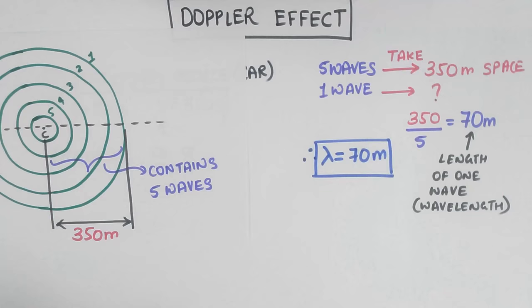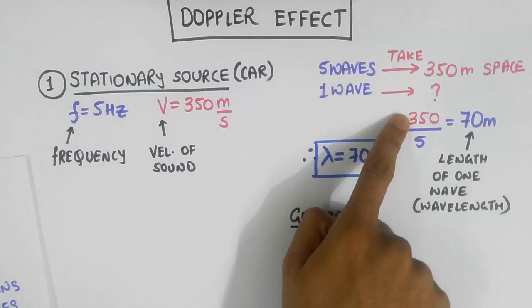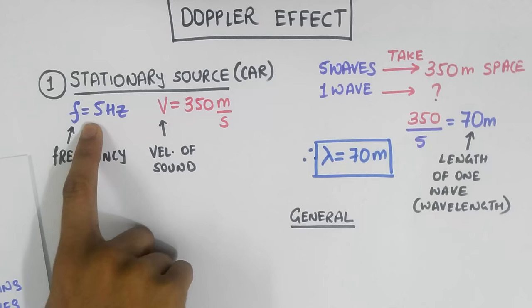So now we can write a general formula for lambda. Notice that this number over here, 350, is actually the velocity of the sound. And this number down here is just the frequency. So lambda equals velocity of the sound V divided by the frequency F.